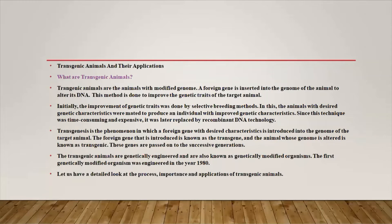This method is done to improve a genetic trait of the target animal. Initially, the improvement of genetic traits was first done by the selective breeding method, where animals with desired genetic characteristics were mated to produce an individual with improved genetic characteristics. Since this technique was time-consuming and expensive, it was later replaced by recombinant DNA technology.